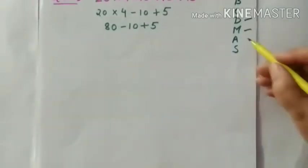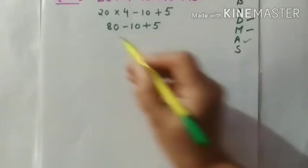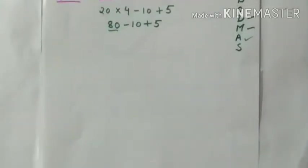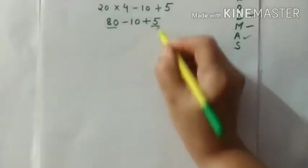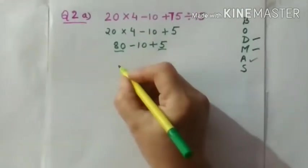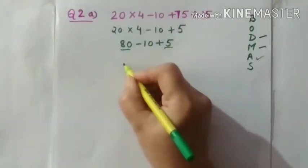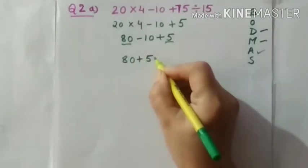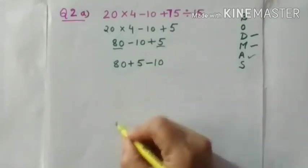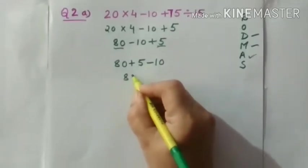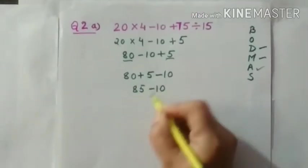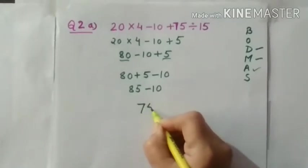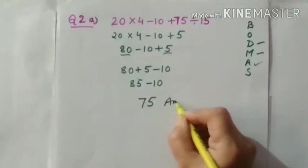Now according to BODMAS rule, we have to follow addition. 80 ke aage koi sign nahing hai. Means this is plus and this is also plus. Means both are positive numbers. So positive numbers can be added first. And then we have to do subtraction. So this will be 85 and then we have to subtract minus 10 and the answer will be 75.